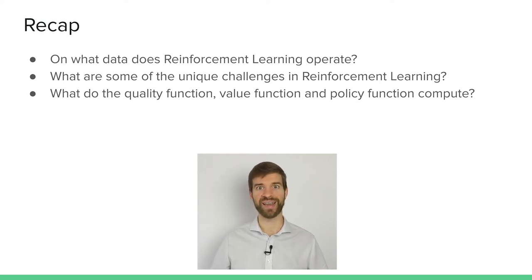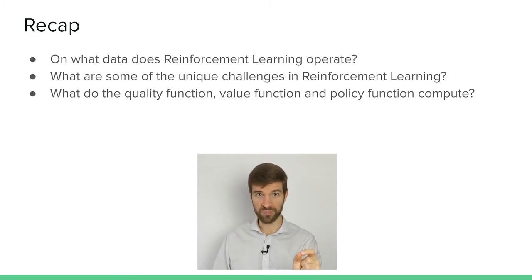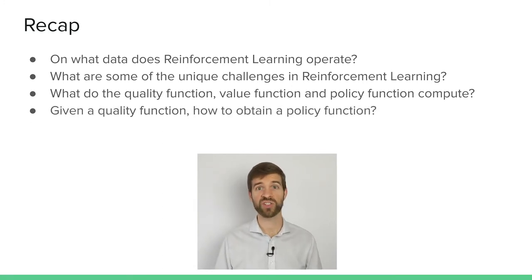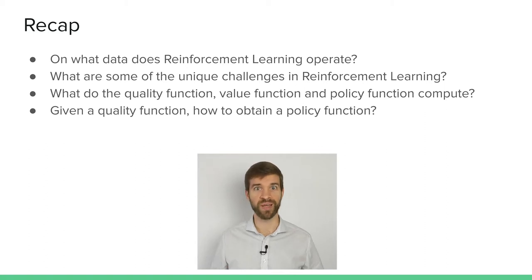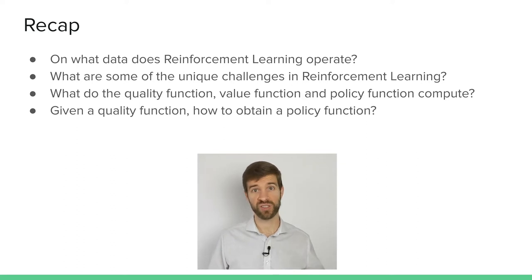The value function says: if I am in state s, how good is that state in general, without referring to a specific action. The policy function computes the probability of action a being the best action in state s — basically saying 'you're here, go there.' Given the quality function, we can obtain a policy by taking the argmax over actions — the action that gives the highest expected reward into the future.